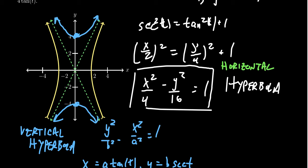So you can describe all of the conic sections using trigonometric parameterizations — the circle, the ellipse, the hyperbola. You can do it for parabolas as well, although you don't need trigonometry for a parabola. If you use tangent and secant to get a hyperbola and want to change the orientation, switch to cosecant and cotangent — those also give hyperbolas but with a different orientation.